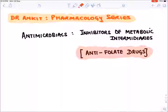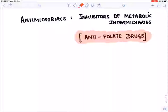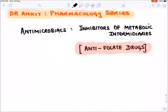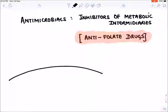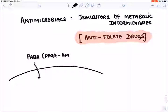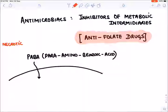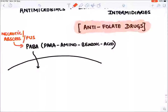Now let's start with antimicrobials which inhibit certain metabolic reactions — one of those is synthesis of folic acid in bacteria. Folic acid in a microbe is an essential component required for synthesizing various products. A bacterium acquires a molecule from outside known as PABA — para-aminobenzoic acid. PABA is present in necrotic cells, in abscess, or in pus-like situations.